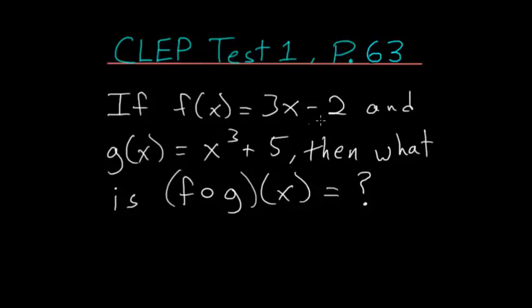If f of x is equal to 3x minus 2, and g of x is equal to x cubed plus 5, then what is f of g of x?